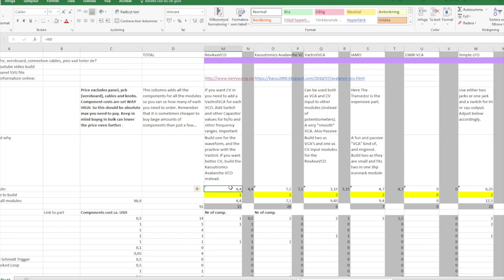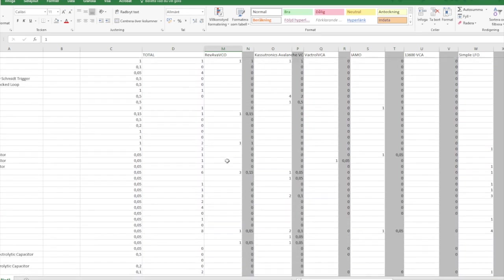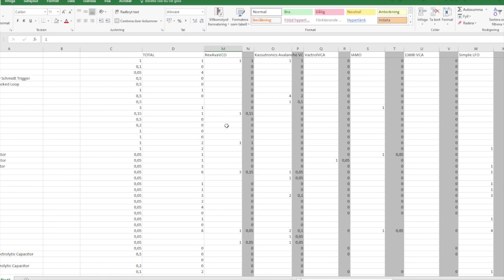And when it comes to price, how much it costs to build, this costs four and a half dollars, this one costs seven. But if you want CV in this you also need to build the Vactrol VCA. It's the same price for the reverse avalanche VCO with CV as with the Casutronics avalanche VCO. And you have some jacks, some pots, one jack, one pot actually. And so this one uses the BC337 and this one uses 2N3904. And it's got many because of the exponential converter and the output buffer.